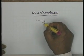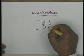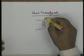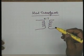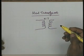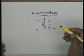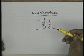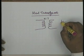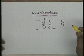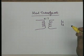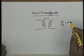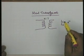An ideal transformer has primary as well as secondary inductances going to infinity. The mutual inductance also goes to infinity, but the ratio of the two inductances is finite. This ratio in terms of turns ratio is equal to L1 by L2. Inductance is proportional to N squared — the square of the number of turns. That is why the ratio is finite, because the ratio of the number of turns is finite.